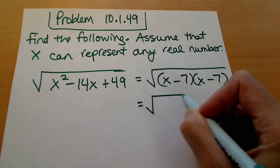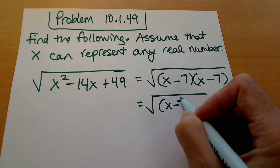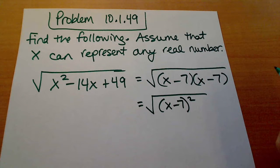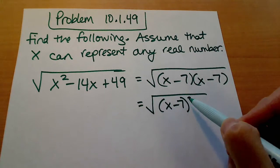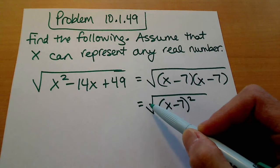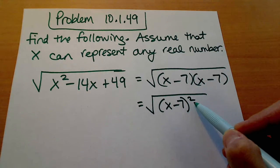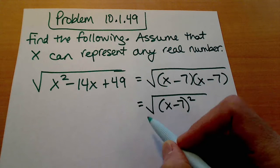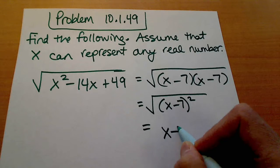So this is essentially the square root of x minus 7 quantity squared. And now when I have the index, which is an assumed 2 when there's nothing written there, and the exponent matching, then out comes just our x minus 7.